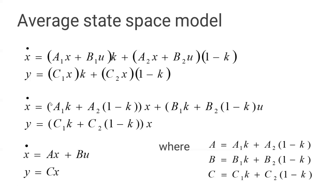After combining the A terms and B terms: x-dot equals [A1k plus A2(1 minus k)] times x plus [B1k plus B2(1 minus k)] times u, and y equals [C1k plus C2(1 minus k)] times x. We define A equals A1k plus A2(1 minus k), B equals B1k plus B2(1 minus k), and C equals C1k plus C2(1 minus k), giving the overall average state space model of the buck converter by substituting the A1, A2, B1, B2, C1, C2 values.